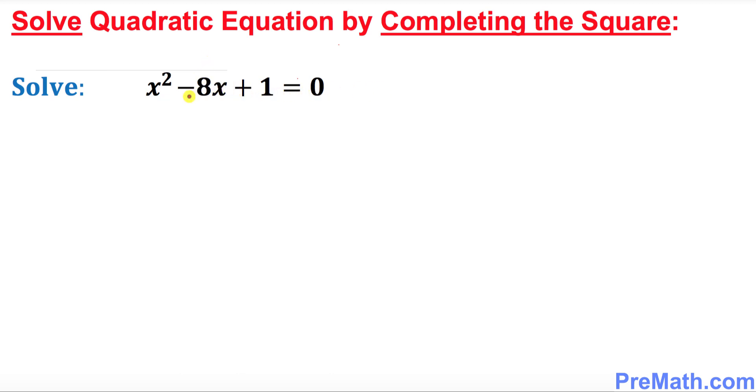The very first thing is you must only have x variables on the left hand side. That means this 1 needs to go on the other side, so we're going to subtract 1 from both sides. This 1 and negative 1 cancels out, so we got x squared minus 8x equals negative 1.